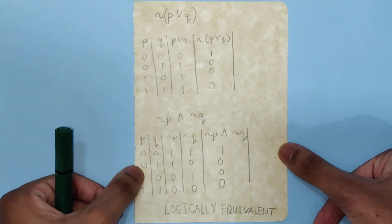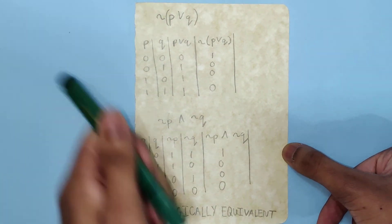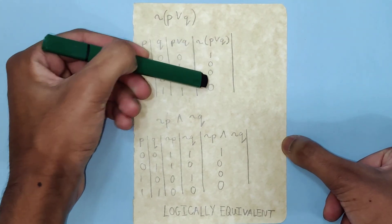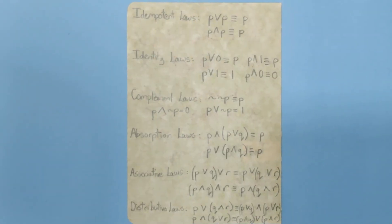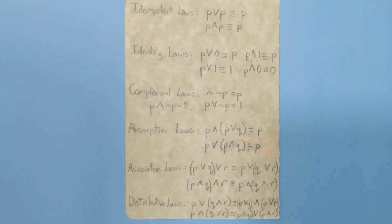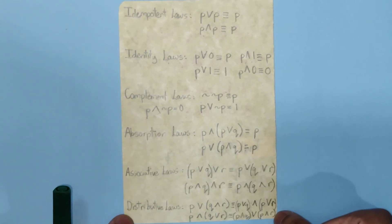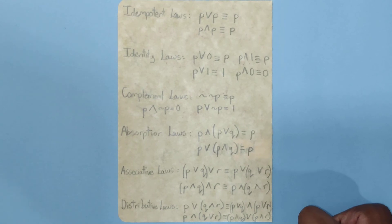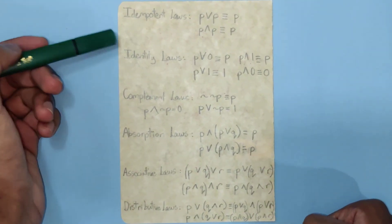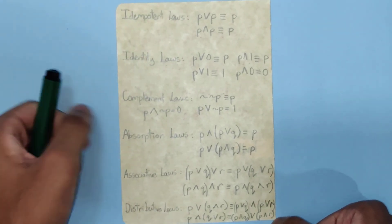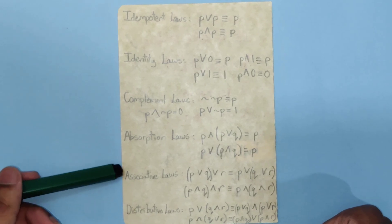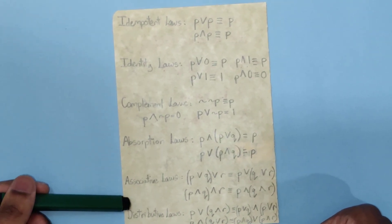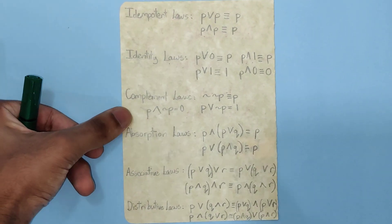There is also a proof for the second law — you can pause the video to copy it or work it out yourself. You do it in a similar way as before, and once the final columns match, you have shown the expressions are logically equivalent. There are also several other laws in logic that students are required to learn, because when you have to break down really long compound propositions you need them. These include the idempotent laws, the identity laws, the complement laws, the absorption laws, and logic is also associative, distributive, and commutative.